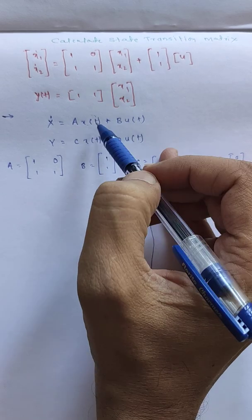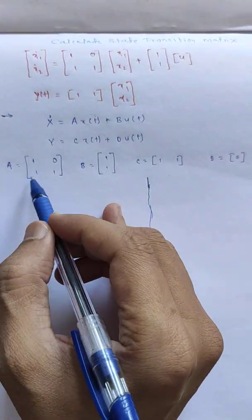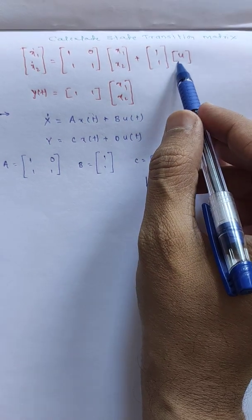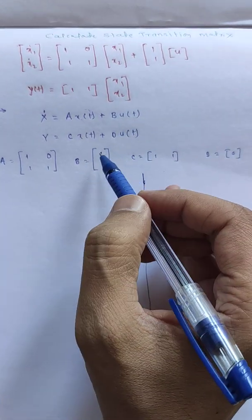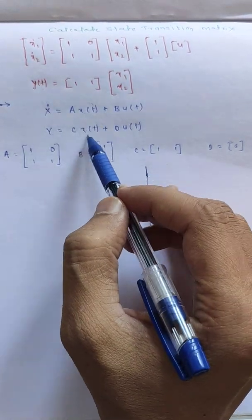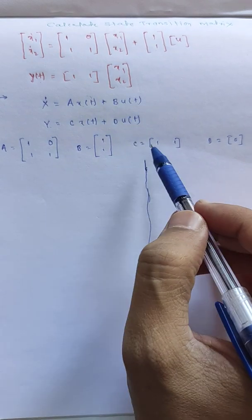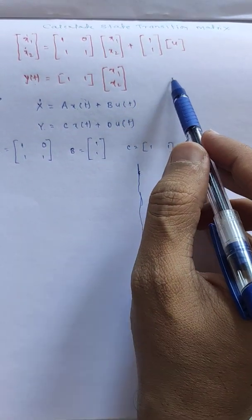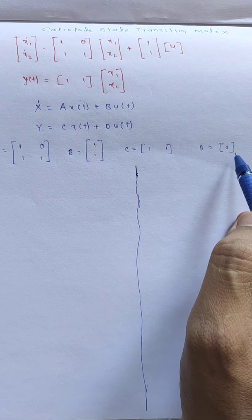If I compare the given equation with the standard form, I get matrix A equal to the given matrix. So B is equal to this matrix. For y(t), the C matrix is 1×1, and since nothing else is present, the value of D is coming as 0.